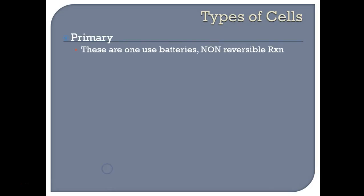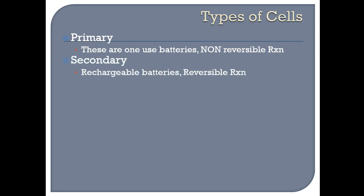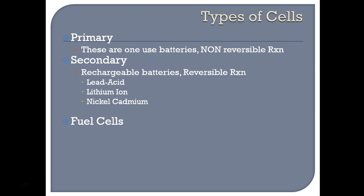Next, we're going to look at a number of different types of cells. Primary cells are one-use batteries — they use non-reversible reactions, basically like your Duracell batteries. Secondary cells are rechargeable batteries that use reversible redox reactions, and they can be reversed by using electricity. We're going to look at lead-acid batteries, lithium-ion batteries, and nickel-cadmium batteries. We'll also look at fuel cells — the hydrogen fuel cell, a methanol or ethanol fuel cell, concentration cells, and finally microbial cells.